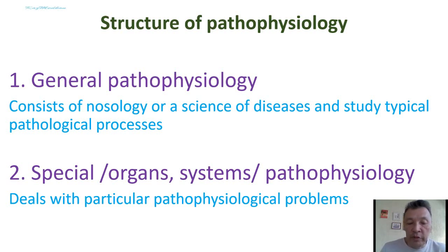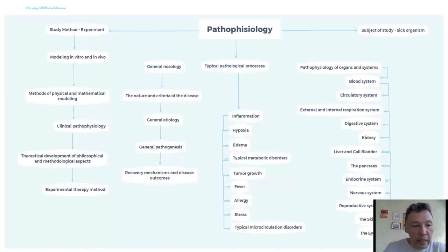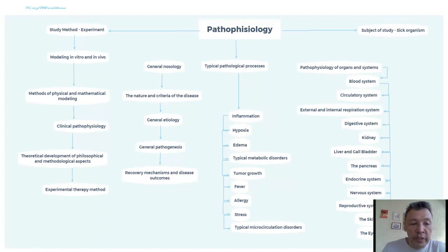Organ systems studied include blood circulation, respiration, the nervous system, and others. This diagram shows the main directions of pathophysiology — methods of study, objects of study, and the structure of pathophysiology.